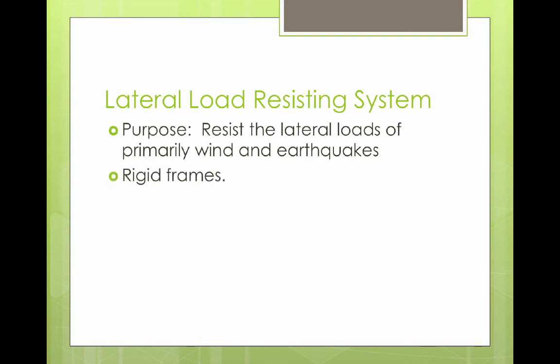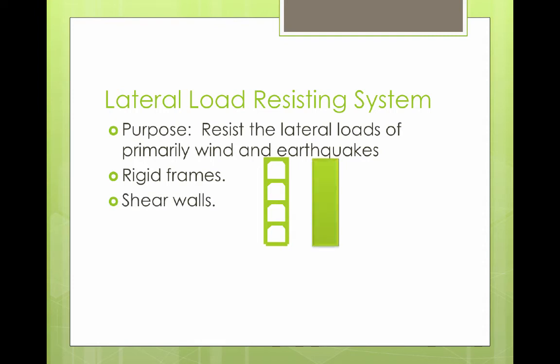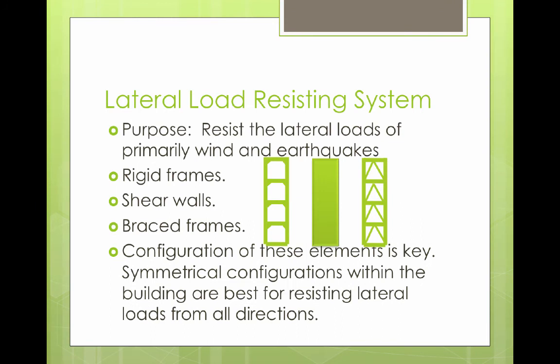Lateral load resisting systems include rigid frames — where the joints are braced so they won't bend — shear walls, which are solid walls of reinforced concrete, and braced frames, which use a truss structure. The configuration of these elements within the building is important, and symmetrical placement is necessary to resist lateral loads from all directions.